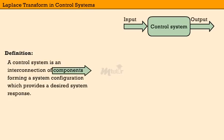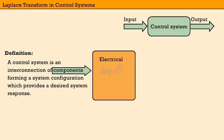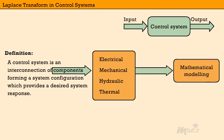Here, the components in control systems are classified as electrical, mechanical, hydraulic, thermal, and so on.